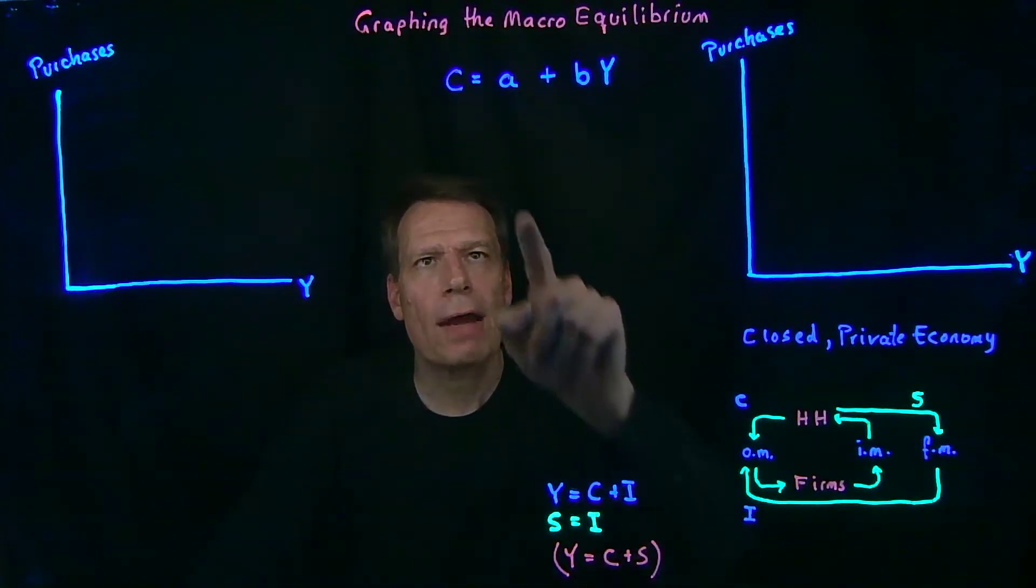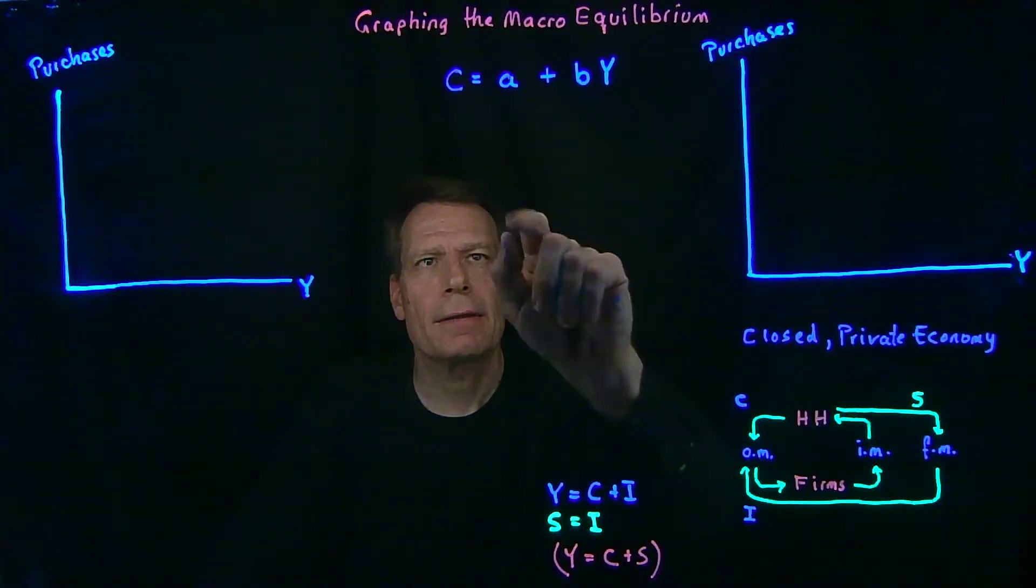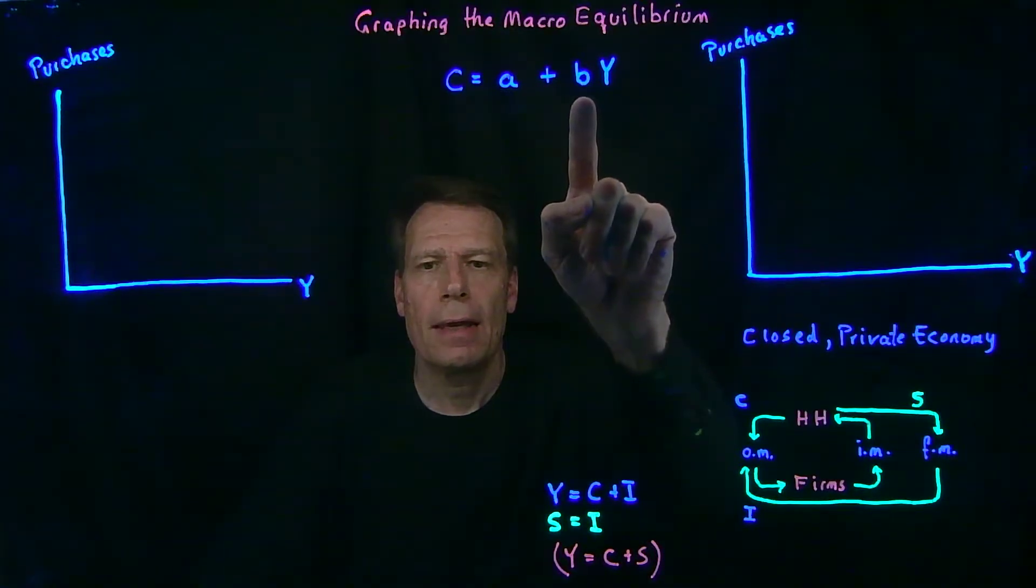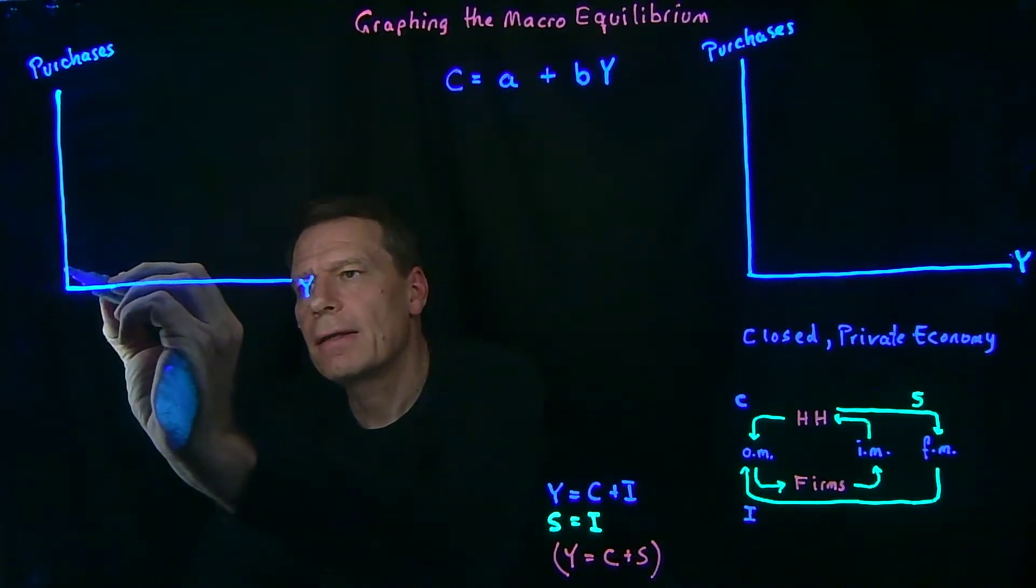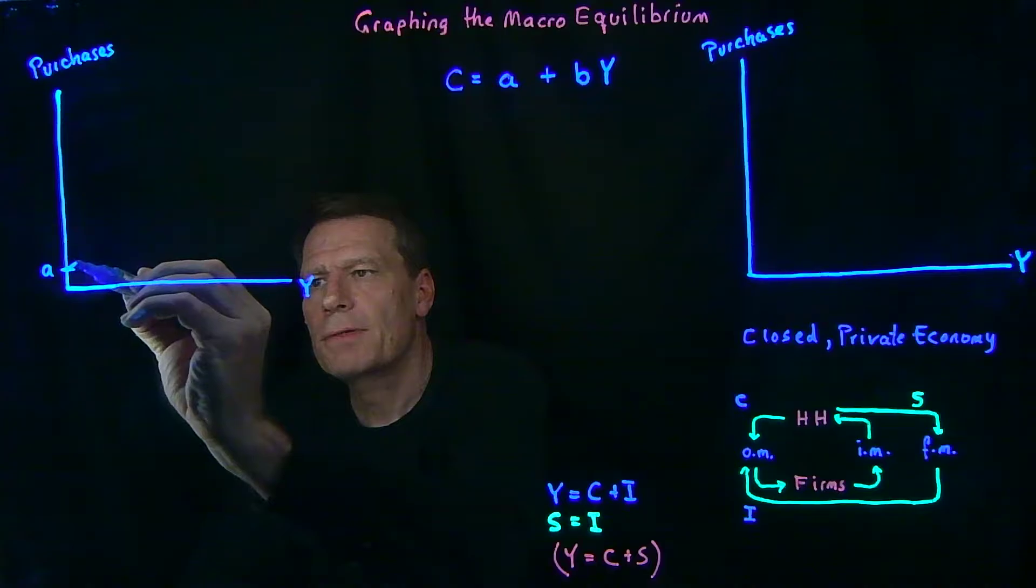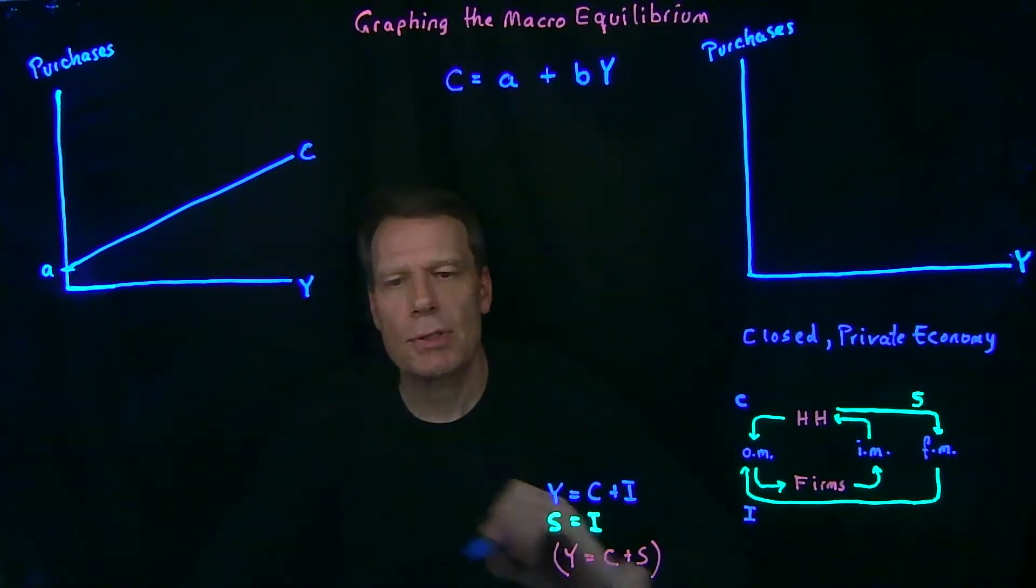And we'll begin by graphing that behavioral equation. Now that's just the equation of a line with intercept A and slope B. So all we have to do is graph a line with intercept A and a positive slope B. That gives us our consumption line.